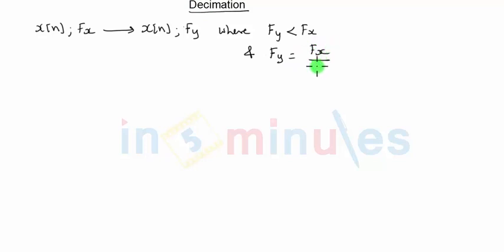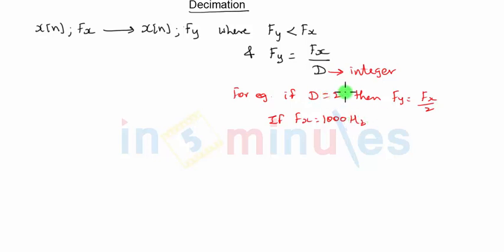Now when we are discussing decimation, the relationship says that fy will be nothing but fx divided by capital D. So the original sampling rate fx will be reduced by D and we will obtain a new sampling rate which is fy, where D will be an integer. So for example, if I take D is equal to 2, then we are saying that fy should be equal to fx by 2. So in this case if let's say fx is equal to 1000 hertz, then what do you mean by decimation by a factor of 2? It simply means that the new sampling rate has to be 1000 by 2 which will be nothing but 500 hertz.